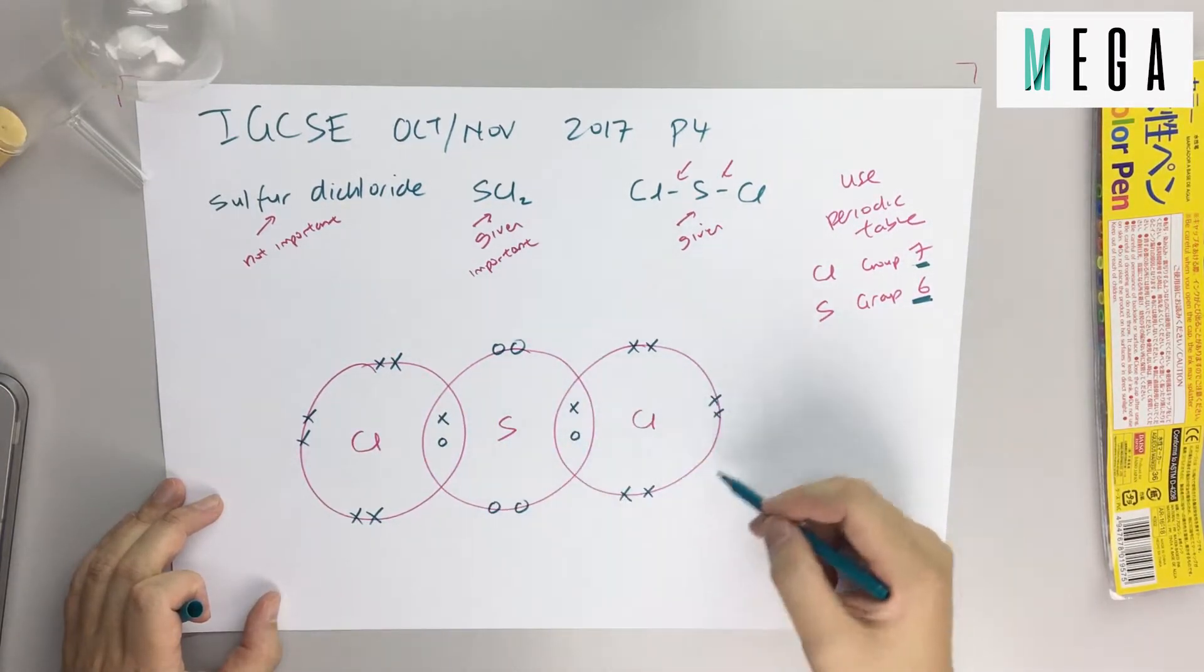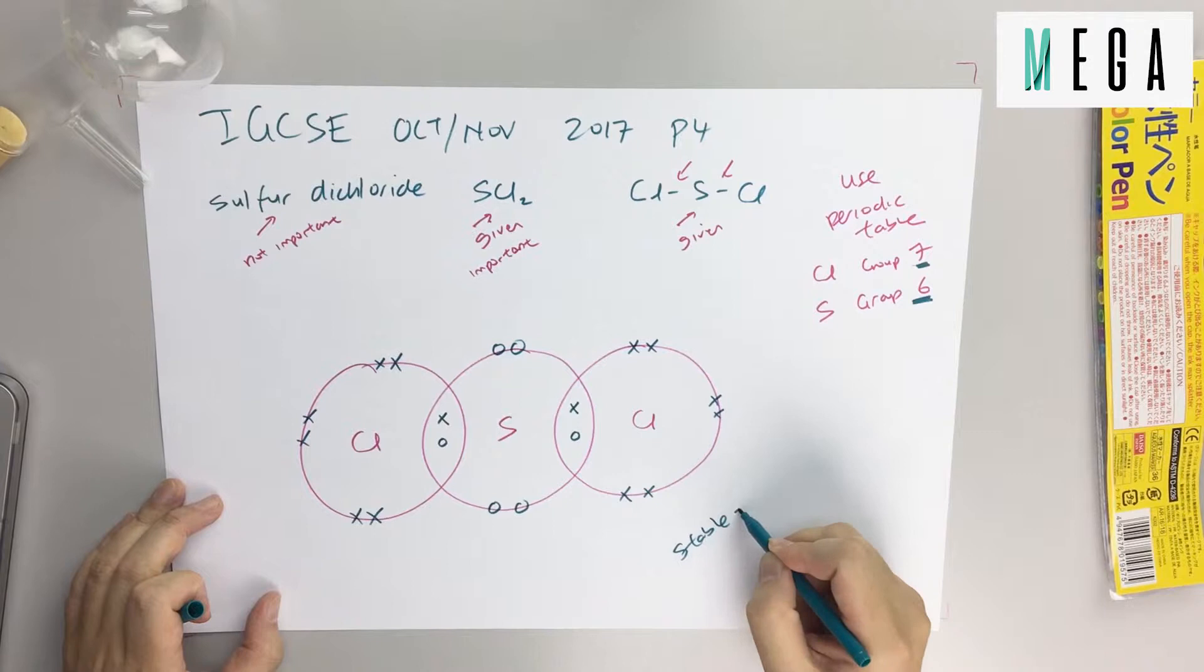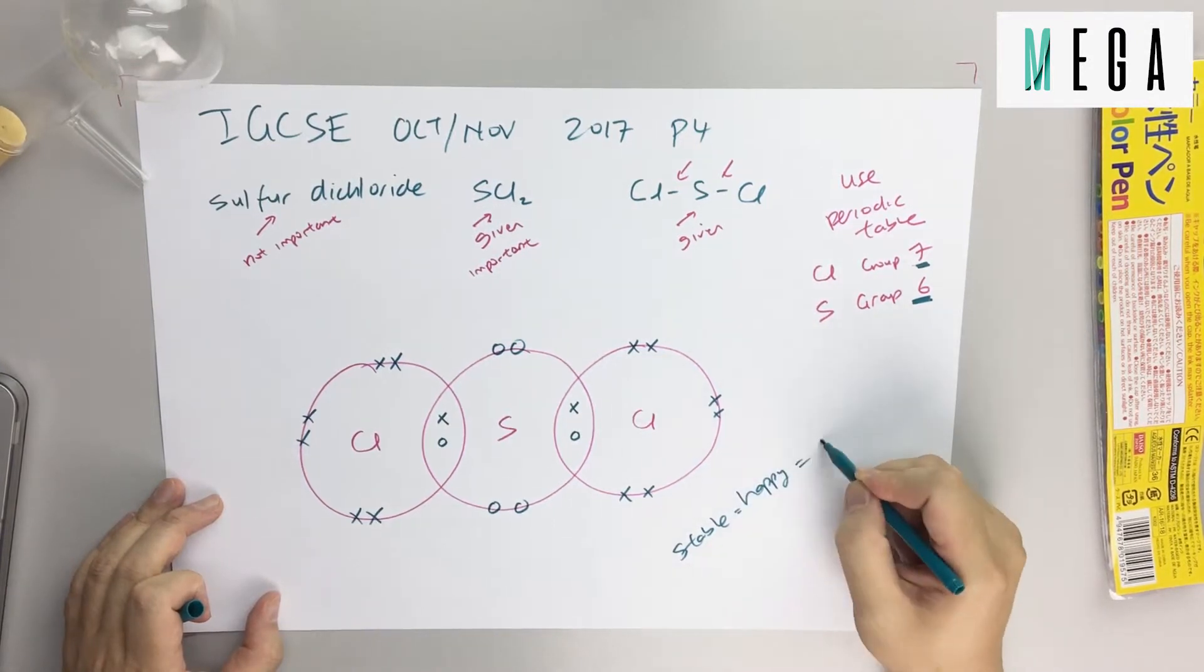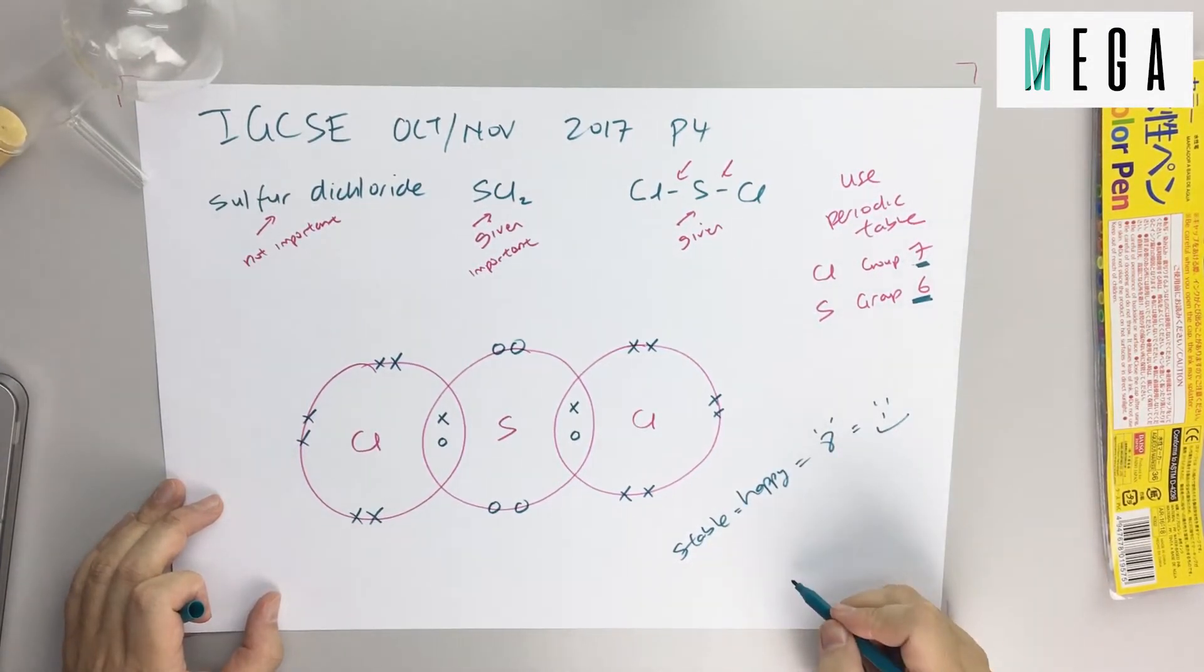Once again check: eight, eight, eight, and eight. So you get stable, happy, correct. Well done.